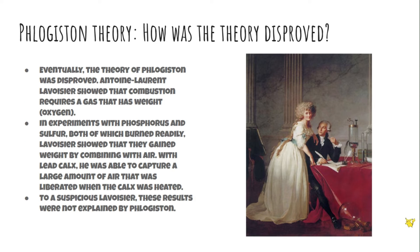Eventually the phlogiston theory was disproved, primarily by Antoine Laurent Lavoisier. He showed that combustion requires a gas that has weight — oxygen. In experiments with phosphorus and sulfur, both of which burned readily, Lavoisier showed they gained weight by combining with a component of air. With lead calcs, he captured a large amount of air liberated when the calx was heated. Lavoisier was very suspicious — something was absorbing weight during combustion, yet heating the calx gave off a gas. These results were not explained by phlogiston.